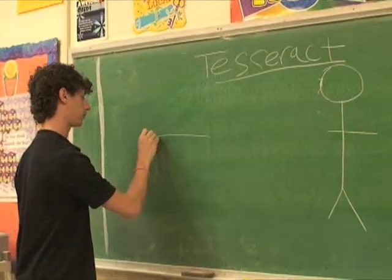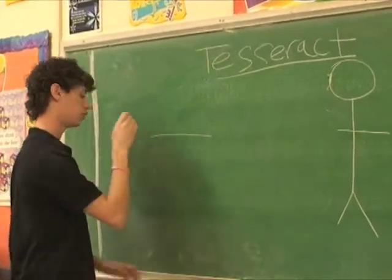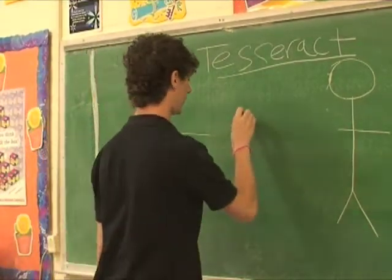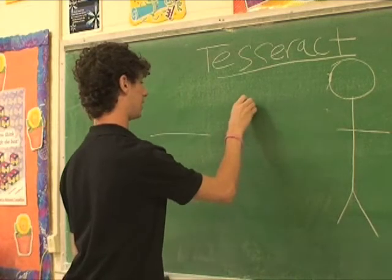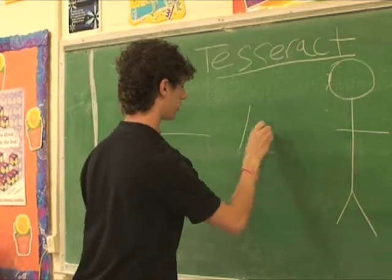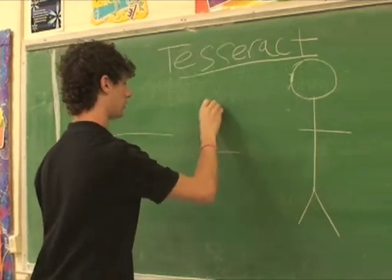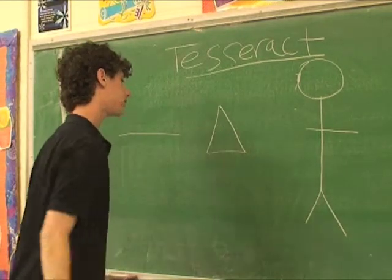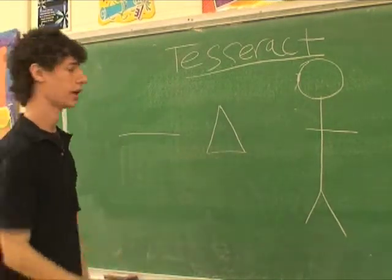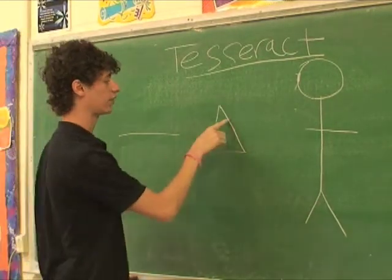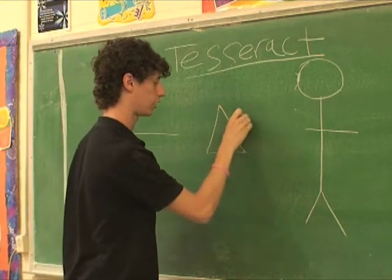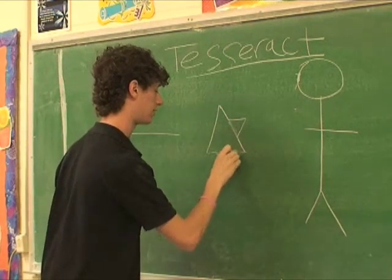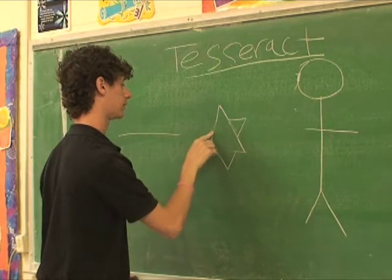Now let's use something called the Koch curve. There is a mathematical figure started by a mathematician called Koch, where you take a triangle like this, and on each side you add another little triangle — like a thorn. The first thing we'll get is a Star of David, right here.